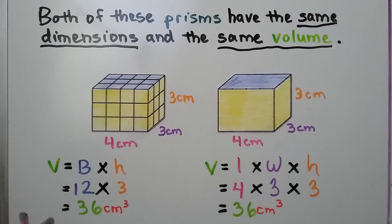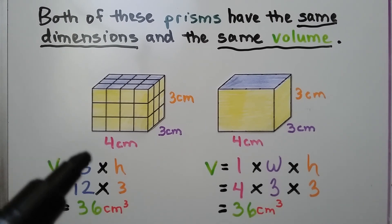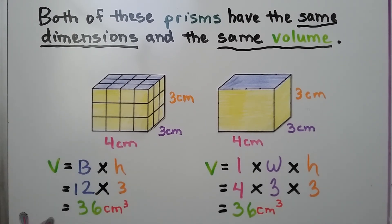As you move forward in math, you're going to find a formula where the volume equals the base times the height. And the base is just the length times the width. Or you're going to see the formula volume equals length times width times height. Either one will get you the same cubic units.